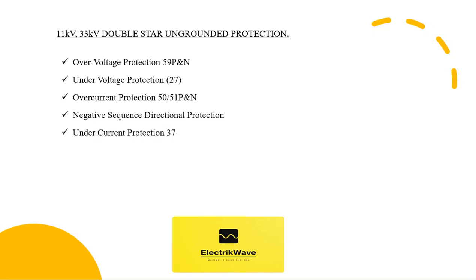11kV, 33kV double star ungrounded protection can be equipped with over voltage protection 59P and N, under voltage protection, over current protection, negative sequence directional protection, and under current protection. Now we will see the above protection requirements in detail.